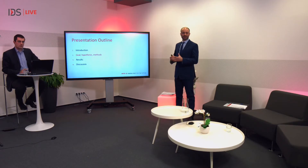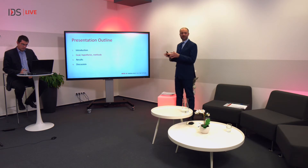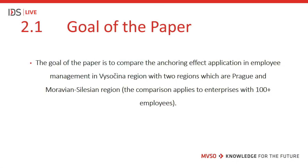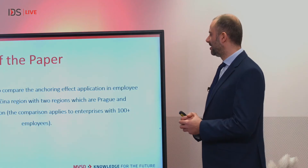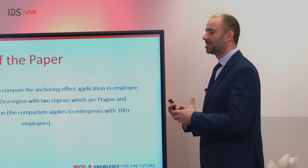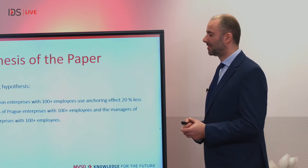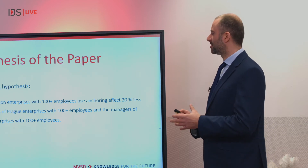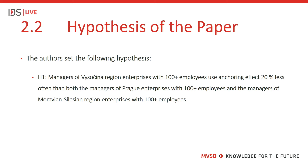The second chapter deals with goals, hypotheses, and methods. The goal of this paper is to compare the anchoring effect application in employee management in Vysočina region with two regions: Prague and Moravian Silesian region. The comparison applies to enterprises with more than 100 employees. The authors set the following hypothesis: managers of Vysočina region enterprises with more than 100 employees use the anchoring effect 20% less often than both managers of Prague enterprises and managers of Moravian Silesian region enterprises with more than 100 employees.